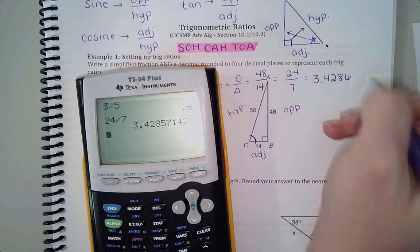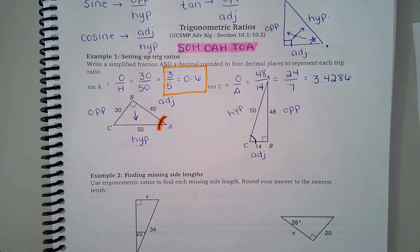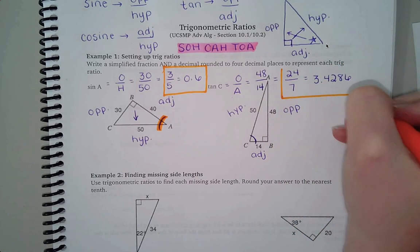The directions do say round to four decimal places. I am going to be picky about that. I want to see all four decimal places. Okay, the math is not that hard but the following directions might be.